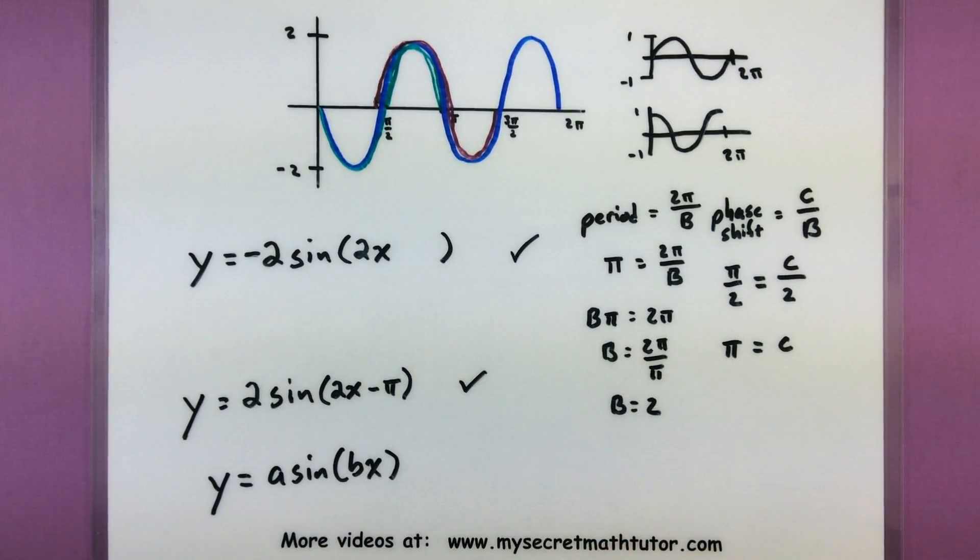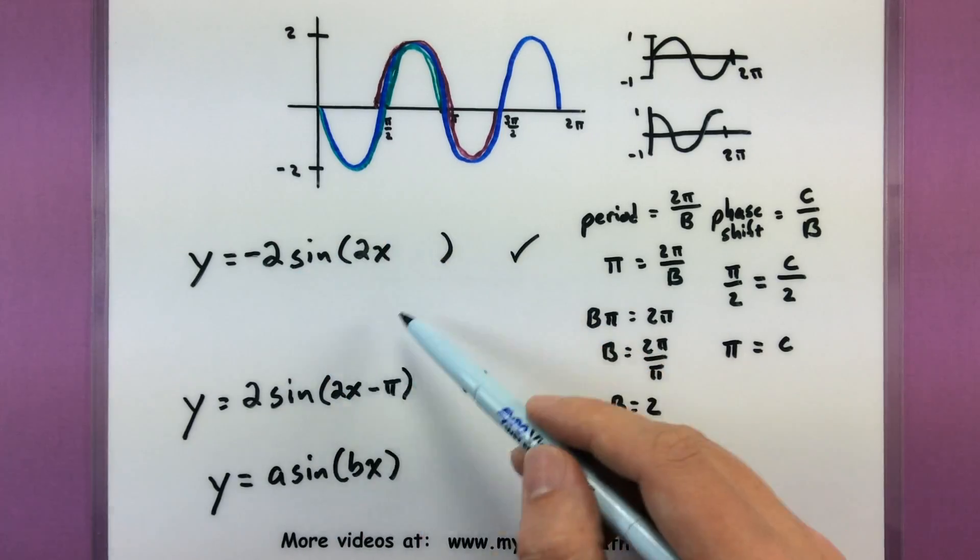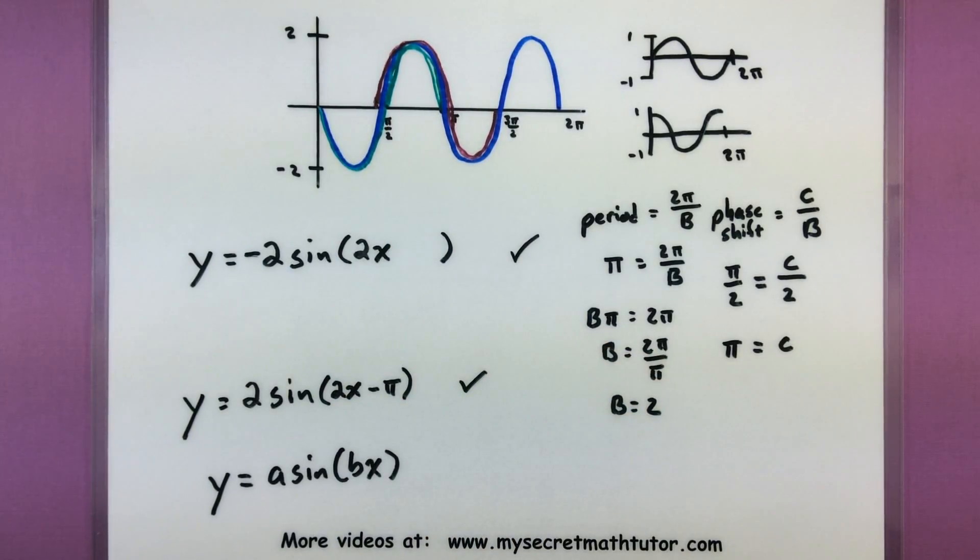So if they give you a template and say find the equation of sine that matches the graph and use this template, then you know you should probably use this one because that matches better than the second one we came up with. Technically, both of these would be perfectly valid. So if they don't give you a template or any further instructions, both of these are perfectly good. All right, let's do one more.